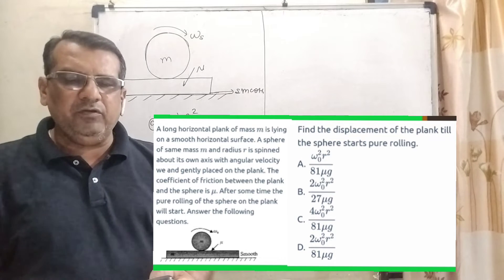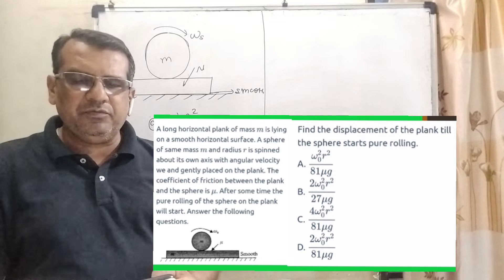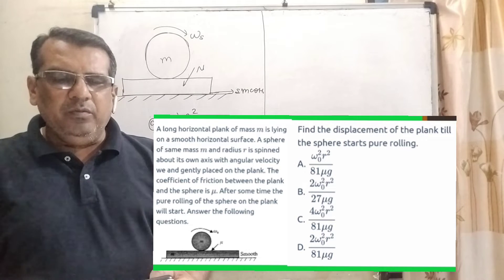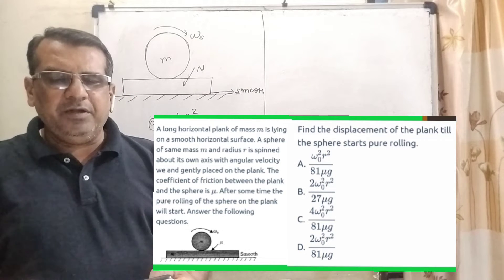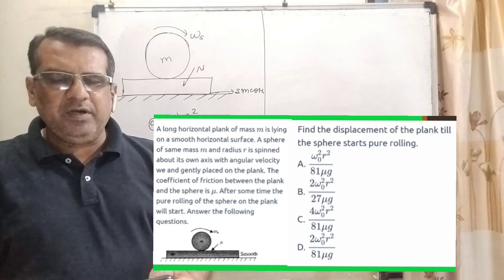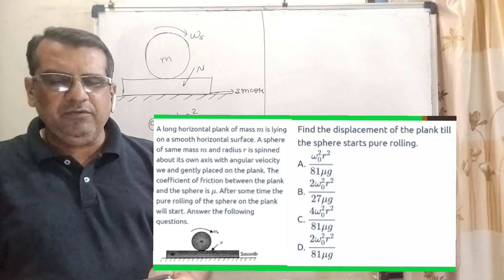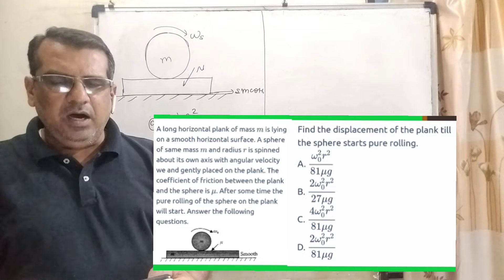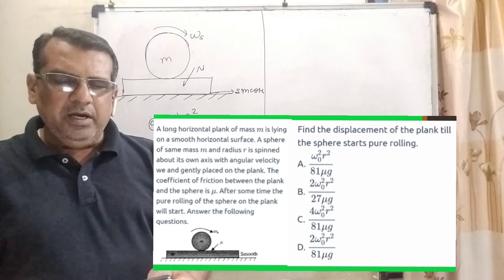Here we have four options. Option A: omega naught squared r squared upon 81 mu g. Option B: 2 omega squared r squared upon 27 mu g. Option C: 4 omega naught squared r squared upon 81 mu g.